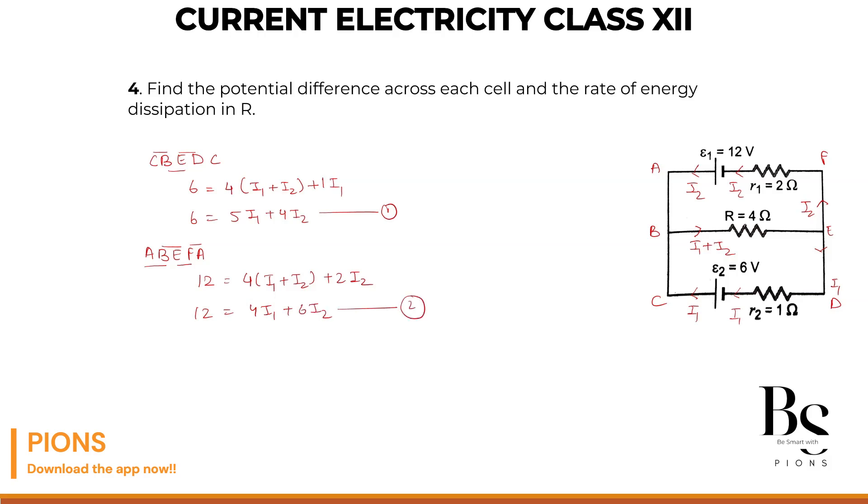Let's multiply the first equation by 3 and the second by 2. First equation gives us 18 equals 15I1 plus 12I2. Second equation gives us 24 equals 8I1 plus 12I2. Subtracting: this cancels out, 15 minus 8 is 7I1, and 24 minus 18 is 6, so minus 6. I1 equals minus 6 by 7.